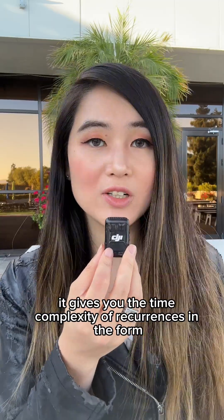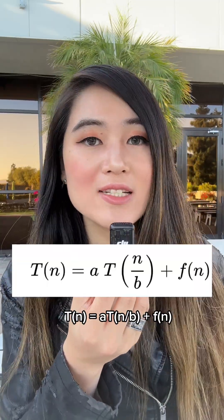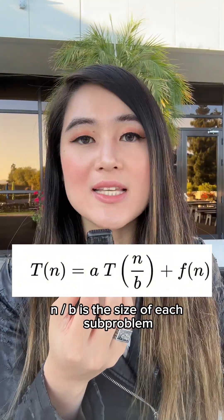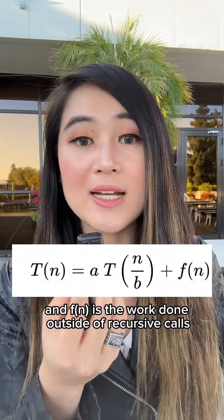It gives you the time complexity of recurrences in the form T(n) equals a times T(n/b) plus f(n), where a is the number of subproblems, n divided by b is the size of each subproblem, and f(n) is the work done outside of recursive calls.